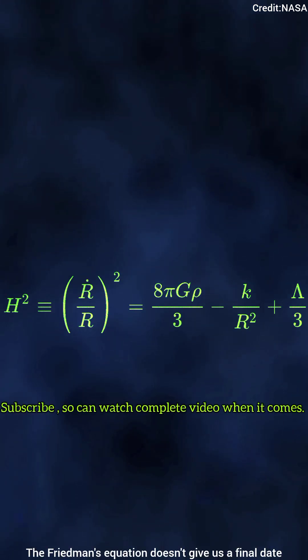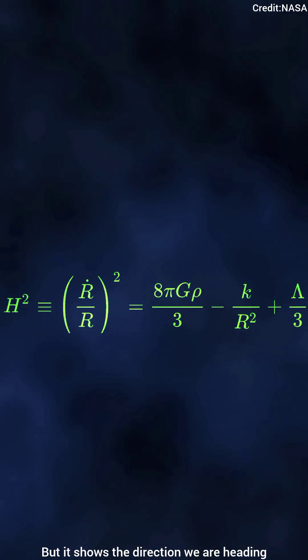The Friedman equation doesn't give us a final date. But it shows the direction we're heading. And it's not what most people imagine.